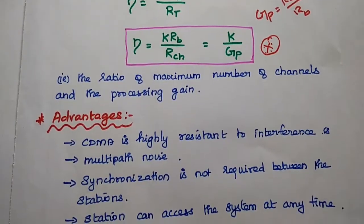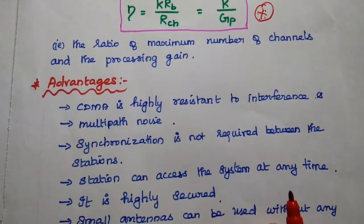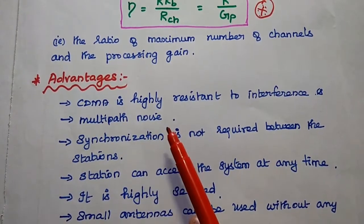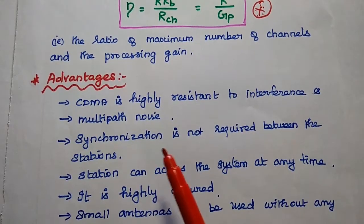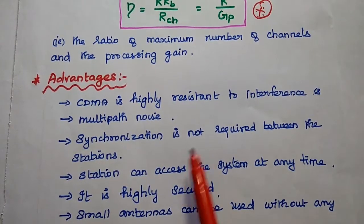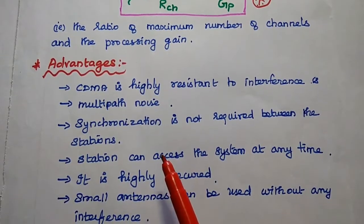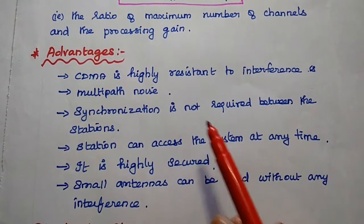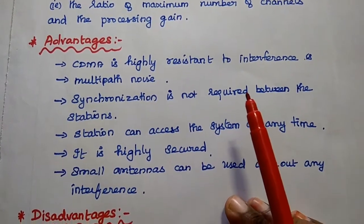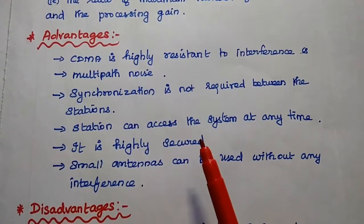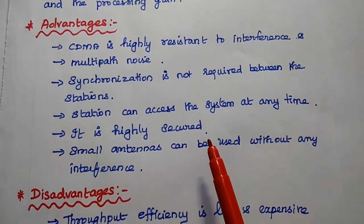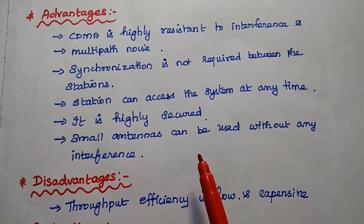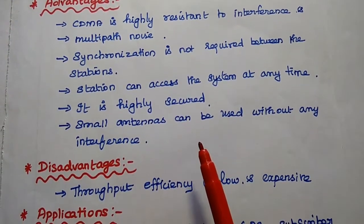Regarding the advantages of CDMA: it is highly resistant to interference and multipath noise. Synchronization between stations is not required — any station can access the system at any time based only on the code waveform, so there is no need for time synchronization. It provides highly secure communication, and small antennas can be used without interference. However, it has some disadvantages: throughput efficiency is low and it is expensive.